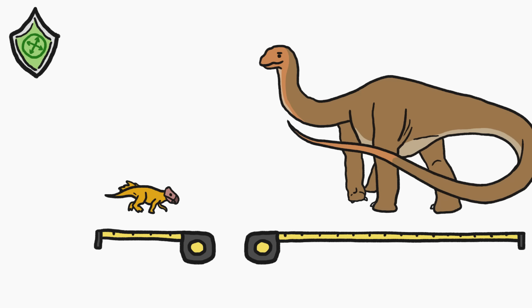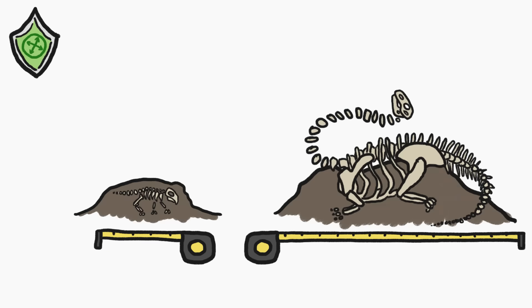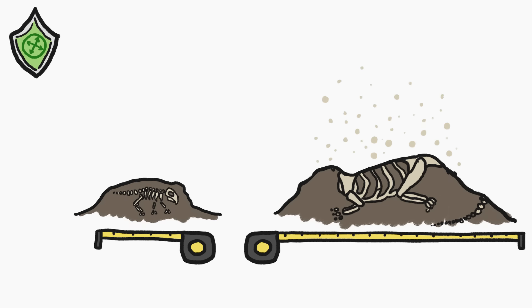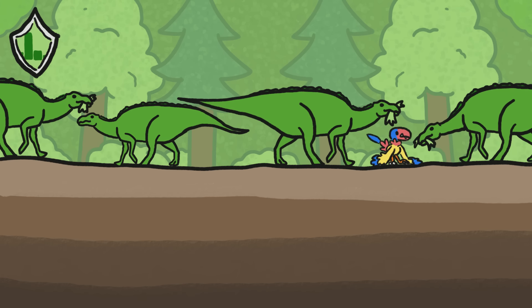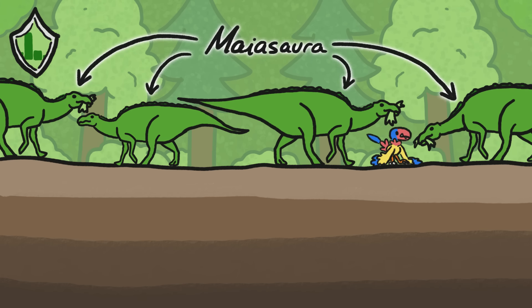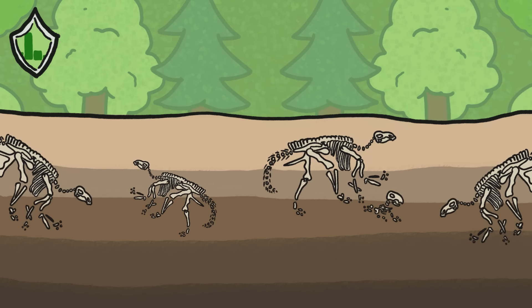Second, since smaller dinos required a lot less sediment to bury, they were more likely to get covered up, and therefore to end up complete. Finally, more common dinos, like the herbivorous hadrosaurs, simply left behind more skeletons than rarer dinos did.